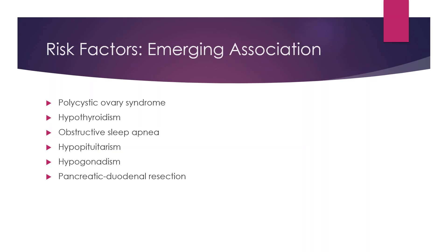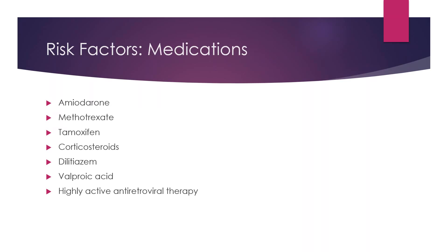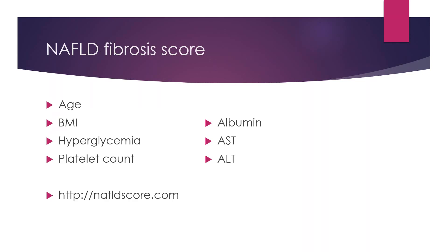Other emerging diseases becoming risk factors for fatty liver include polycystic ovary syndrome, hypothyroidism, obstructive sleep apnea, hypopituitarism, hypogonadism, and pancreatic duodenal resection. There are also some medications that are causing risk factors for fatty liver disease. The NAFLD fibrosis score, which indicates how much scarring you have on your liver, can be calculated on a specific website.